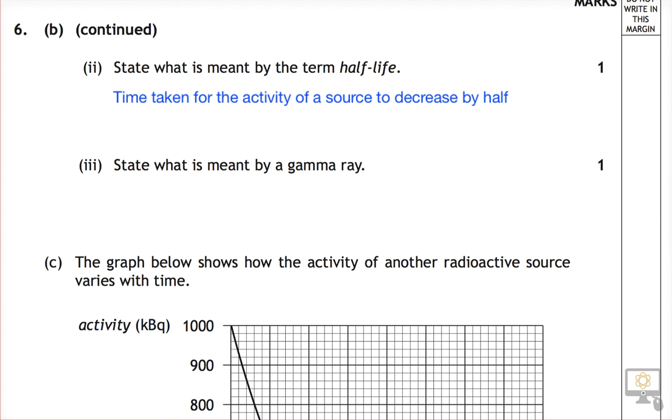It could be written as the time taken for the activity of a source to decrease by half its original value, which is certainly the way I teach it. So another way you could say it is it's the time taken for half the nuclei to decay, and that would be a good way to put it.